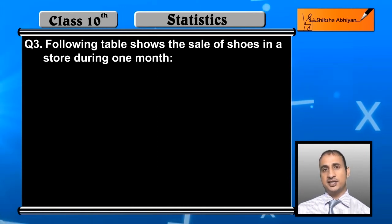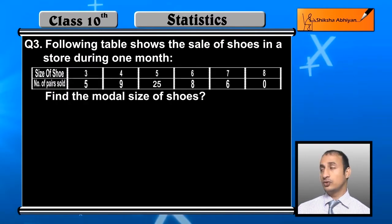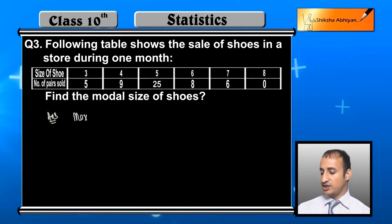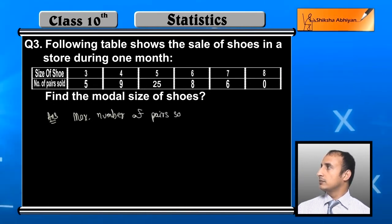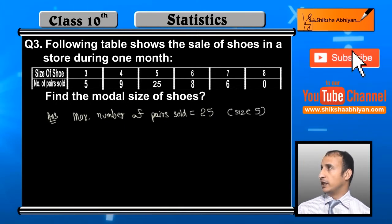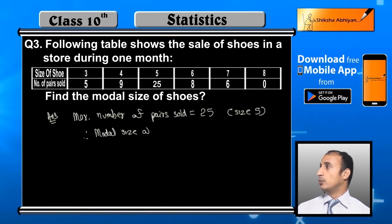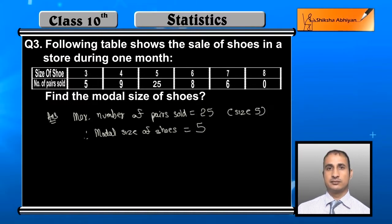To find the modal size, we take the highest frequency. The highest frequency here is 25 — the maximum number of pairs of shoes sold is 25, which corresponds to size 5. So the modal size of shoes is 5, because the highest frequency is 25 and it belongs to size 5.